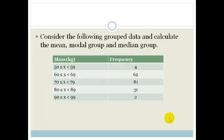So let's look at an example. We've got grouped data, we've got a whole bunch of people, and we measure their mass. It's already been grouped for us. For example, we've got 4 people in the range from 50 to 59, 62 people from 60 to 69, 81 people from 70 to 79, etc. We've already grouped this data. And now we want to know what was the mean mass, which is the modal group, and what is the median group. In other words, what was the average mass, which group had the most people in it, and which was the average group.